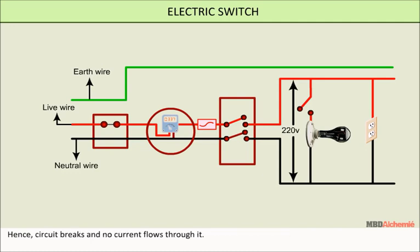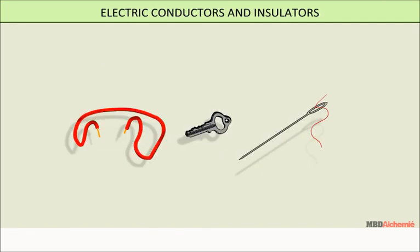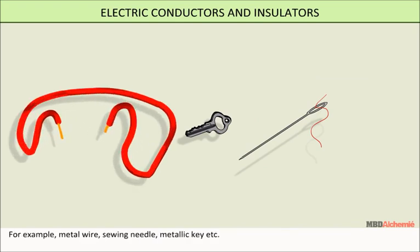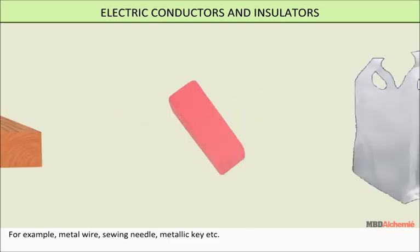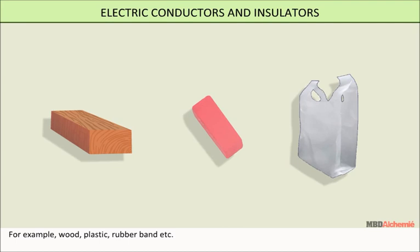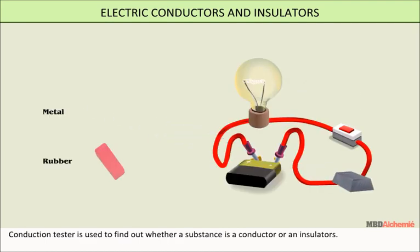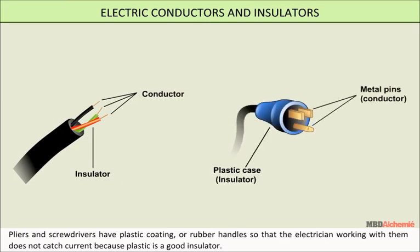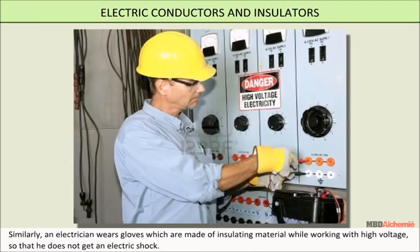Electric conductors are those substances which allow electric current to pass through them — for example, metal wire, sewing needle, metallic key, etc. Insulators are those substances which do not allow electric current to pass through them — for example, wood, plastic, rubber band, etc. A conduction tester is used to find whether substances are conductors or insulators. Pliers and screwdrivers have plastic or rubber handles so that the electrician does not catch current, because plastic is a good insulator. Similarly, an electrician wears gloves made of insulating material while working with high voltage so that he does not get an electric shock.